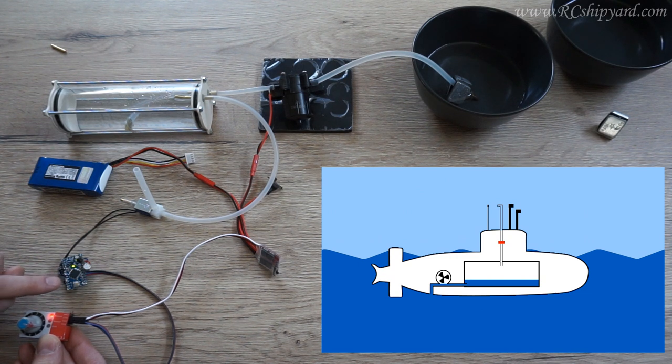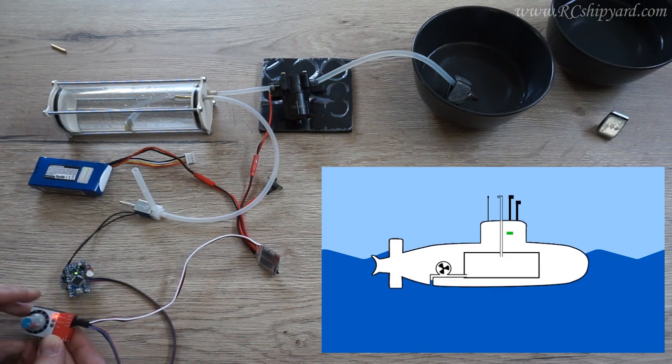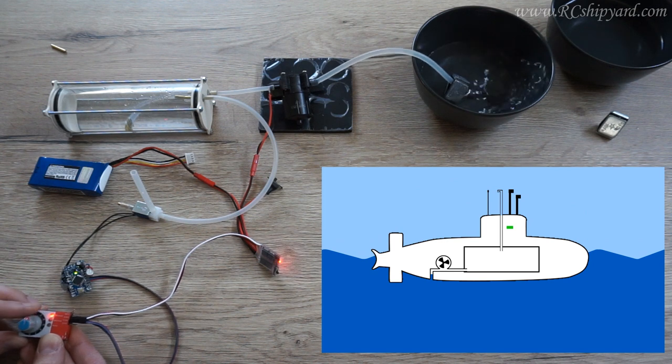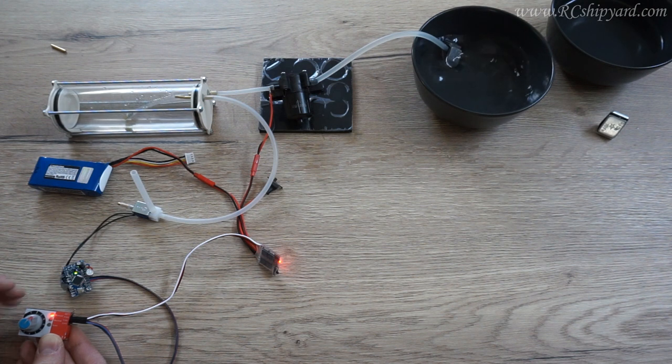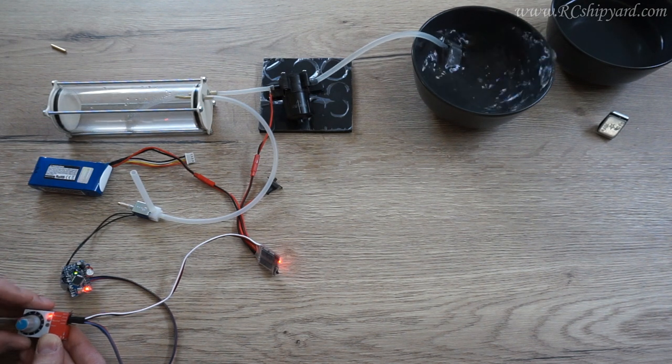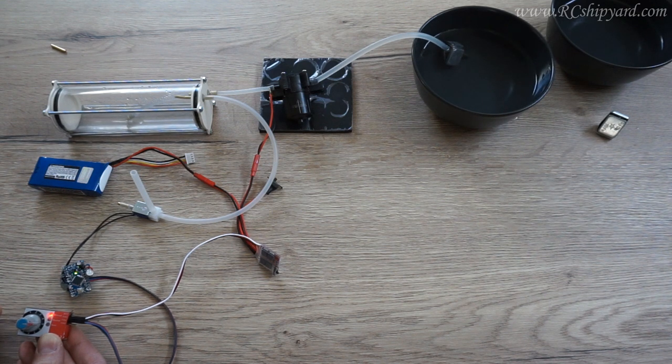And now I will empty it about halfway with the solenoid closed. So the LED will be off and at some point I will move the dial all the way so the solenoid will open. And this is how it works.